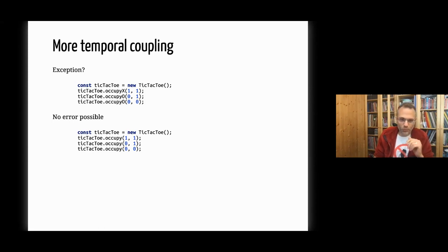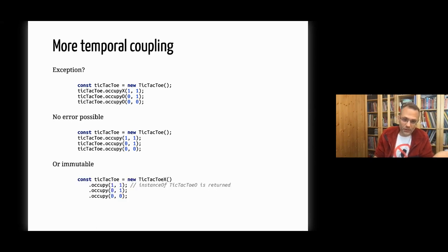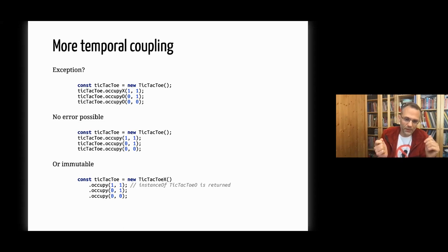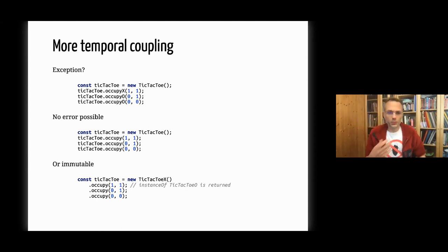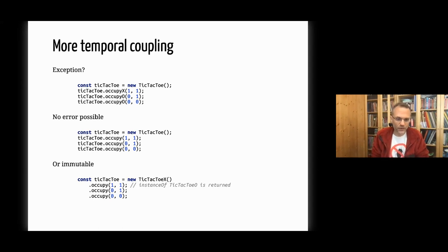A small design change can make a big difference. For those who prefer immutable objects — tic-tac-toe here is mutable, which is another source of bugs. We can solve this with immutable objects by having one TicTacToeX class and one TicTacToeO class, where X returns an O and O returns an X. We can often solve temporal coupling simply by encapsulating things and enforcing it with the type system.